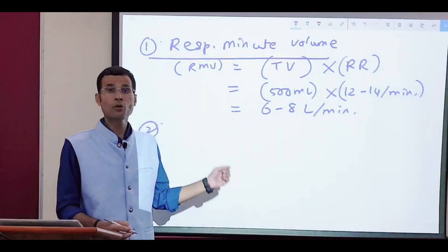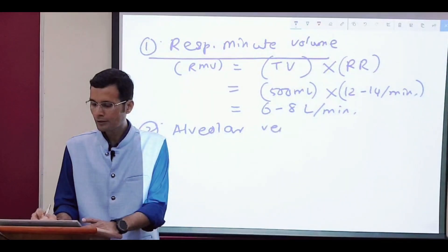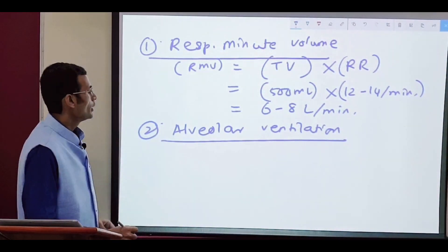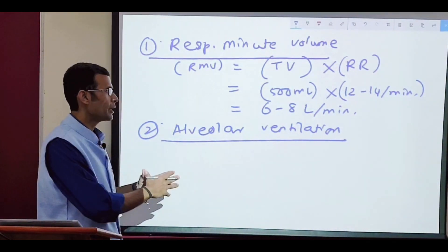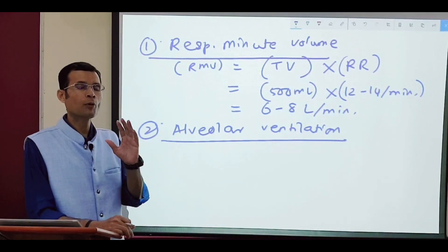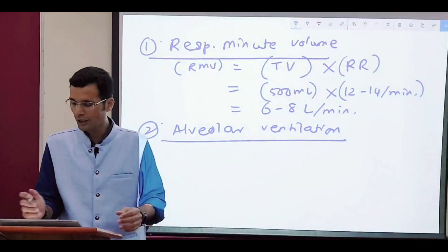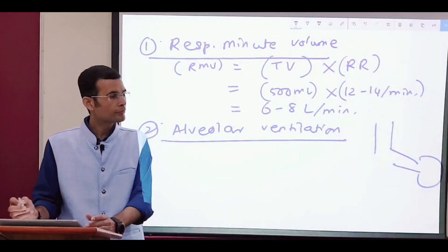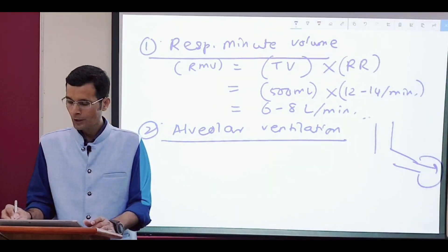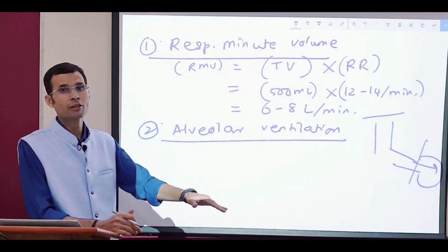The second, and more important definition, is alveolar ventilation per minute. We inspire 500 ml in each breath, but out of that 500 ml, roughly 150 ml stays in the dead space. It does not reach the alveoli and does not take part in gas exchange.